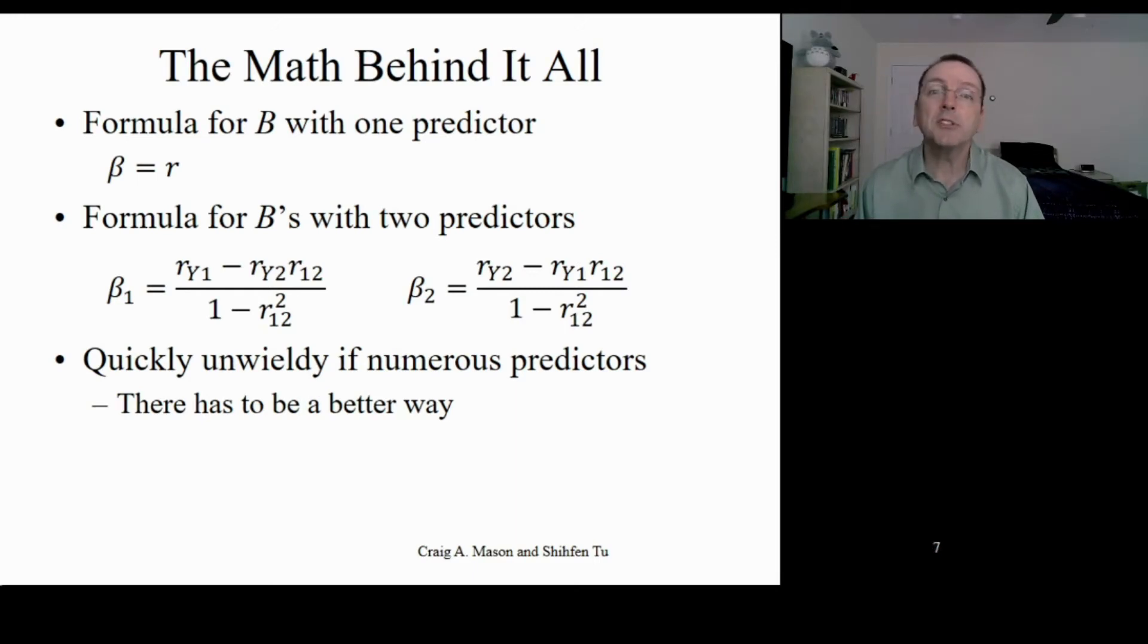In matrix terms, the formula for calculating regression coefficients is b equals x transpose x inverse x transpose y. And that works whether you have 1, 2, or 20 predictors. What it does is it gives you a vector that contains a list of each of the regression coefficients, b0, b1, b2, and on and on and on.